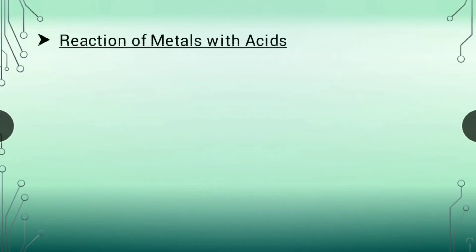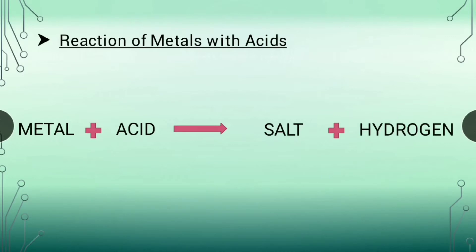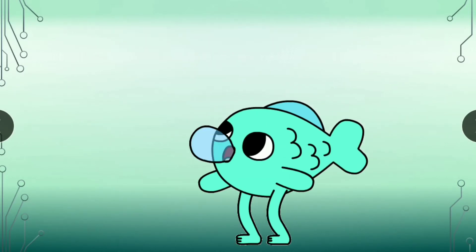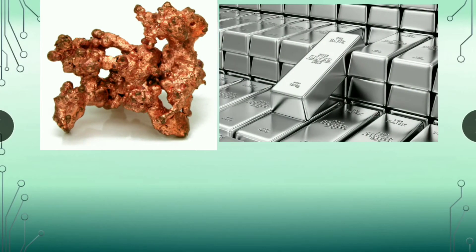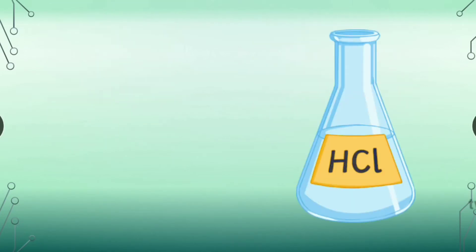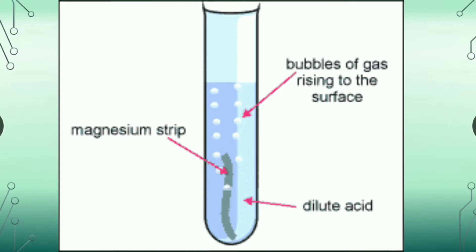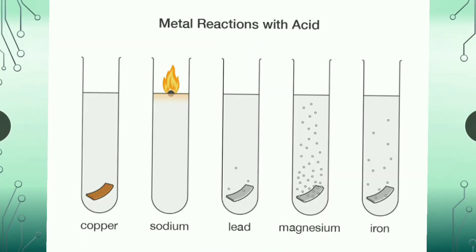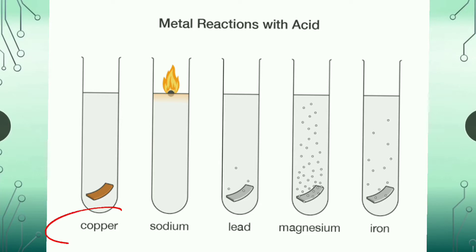Let's begin with the reaction of metals with acids. Most of the metals react with dilute acids to form salts and hydrogen gas. We can write this in equation form: metal plus acid gives salt plus hydrogen gas. Do you know, only the less reactive metals like copper, silver and gold do not react with dilute acids. The intensity of reaction of a metal with dilute acid depends on the chemical reactivity of the metal. Depending on their reactivity, some metals react violently, some react rapidly, some react only on heating, whereas some metals do not react with dilute acids at all.